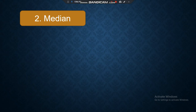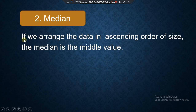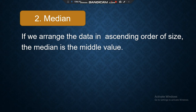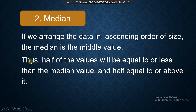Now let's go to the second one, which is the median. The median — if we arrange the data in ascending order of size, the median is the middle value. Thus, half of the values will be equal to or less than the median value, and half equal to or above it.